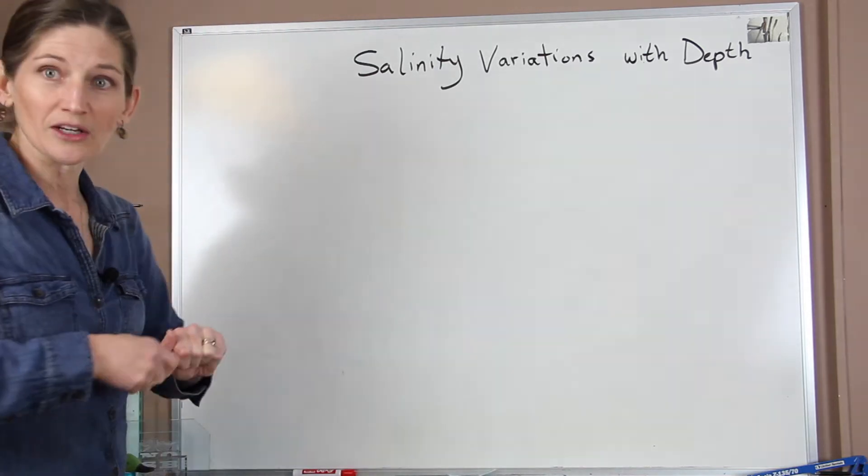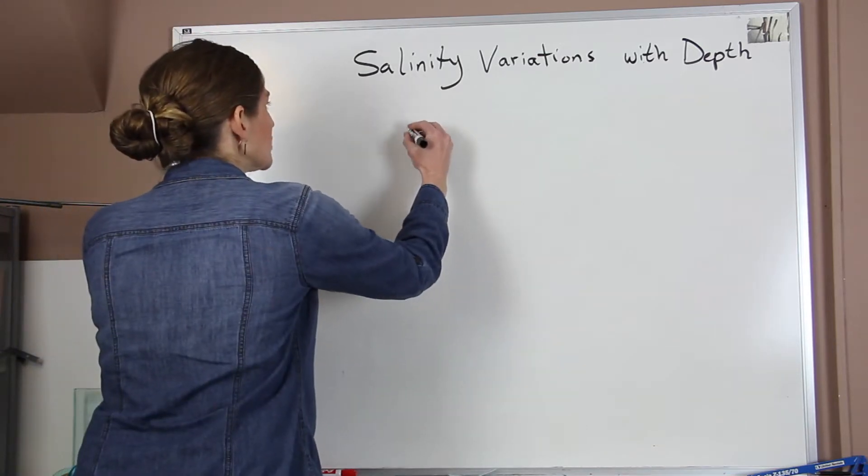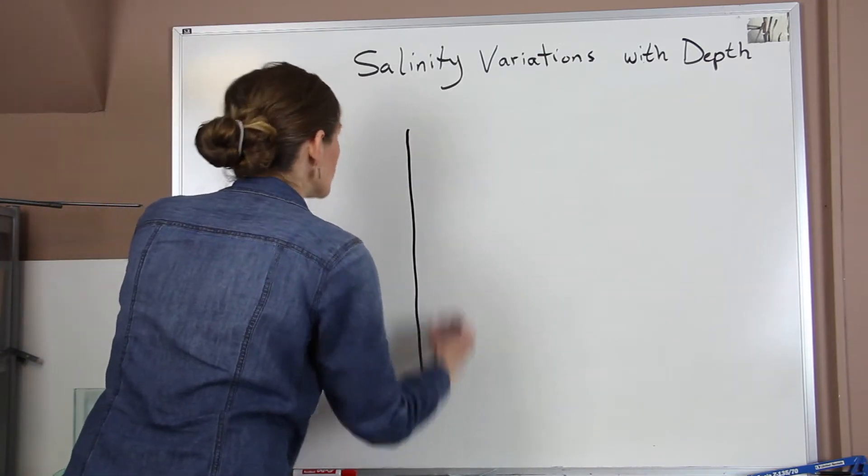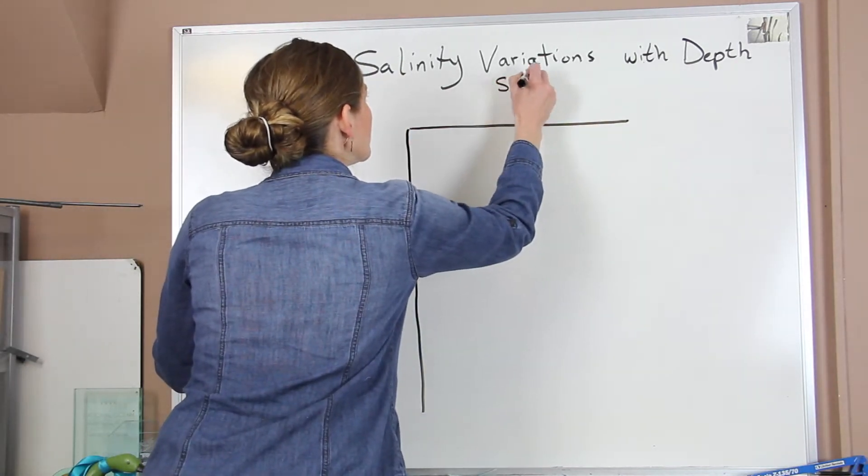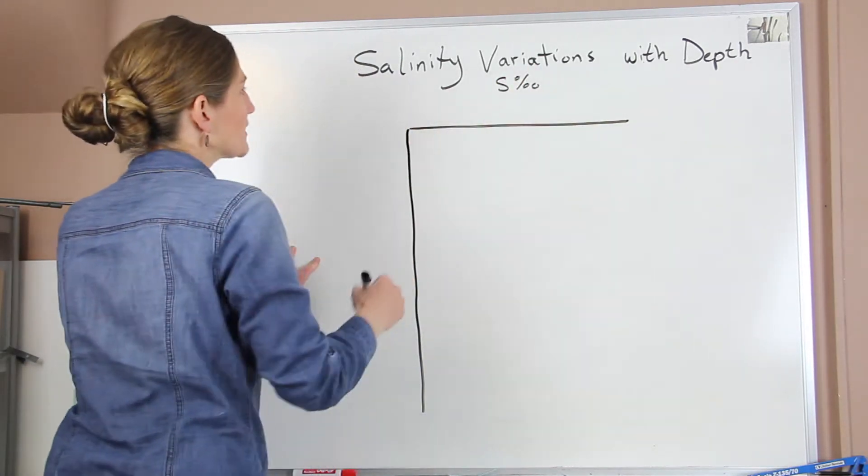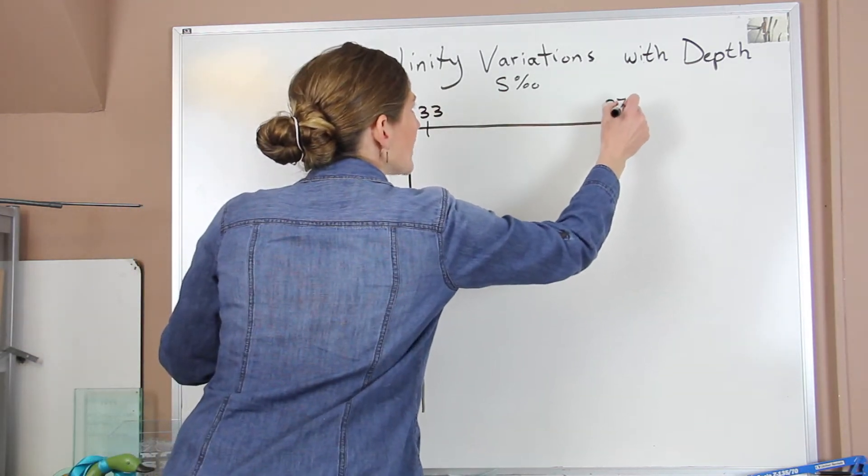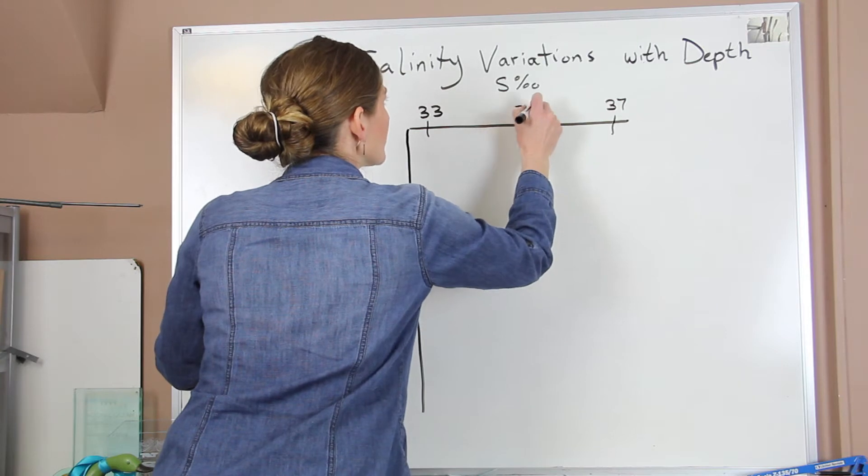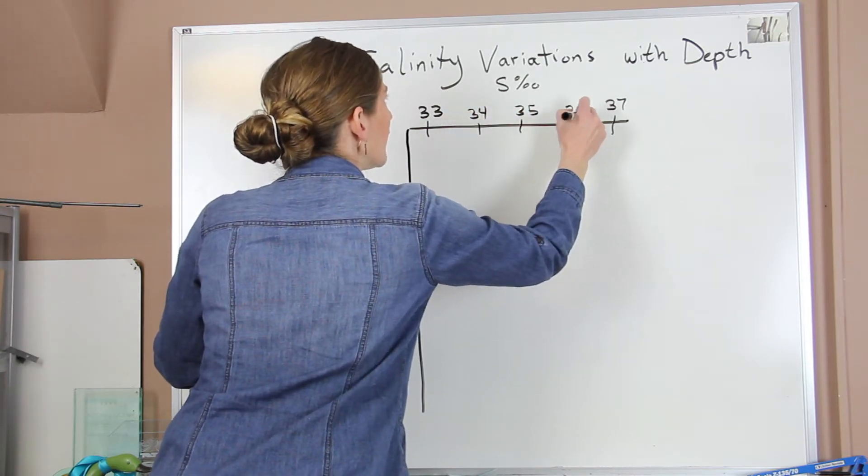So to visualize that, we can create a nice graph and take a look at the changes in our salinity. So we're going to draw a table like this. We're going to put our salinity in parts per thousand on the top and we're going to go from 33 parts per thousand to 37. So we'll have 35, 34 and 36.